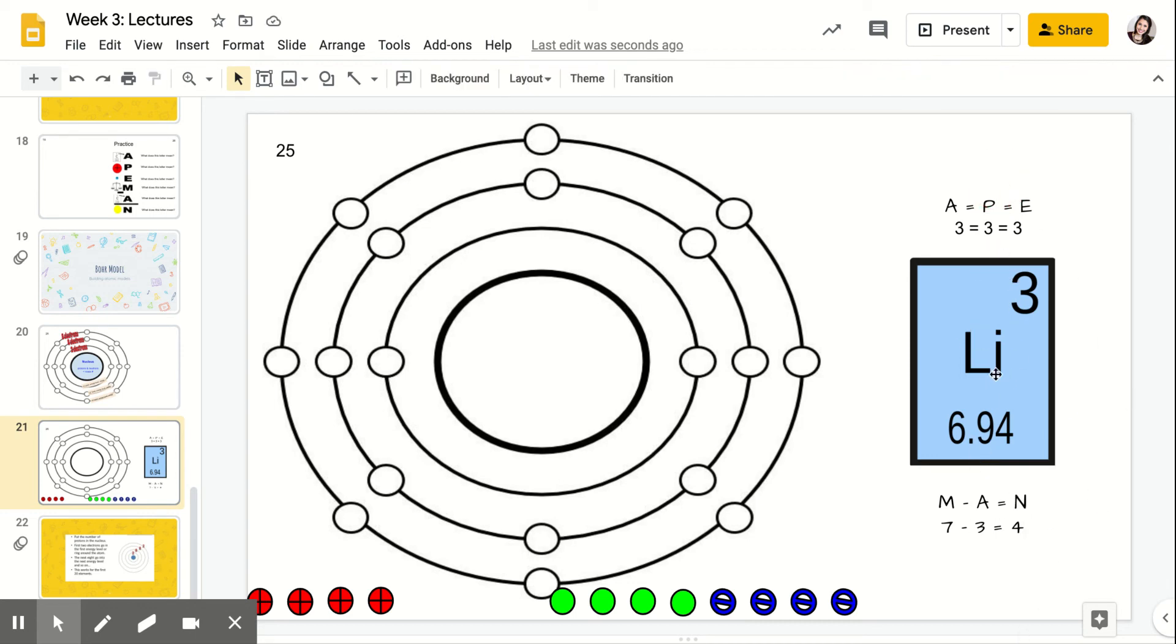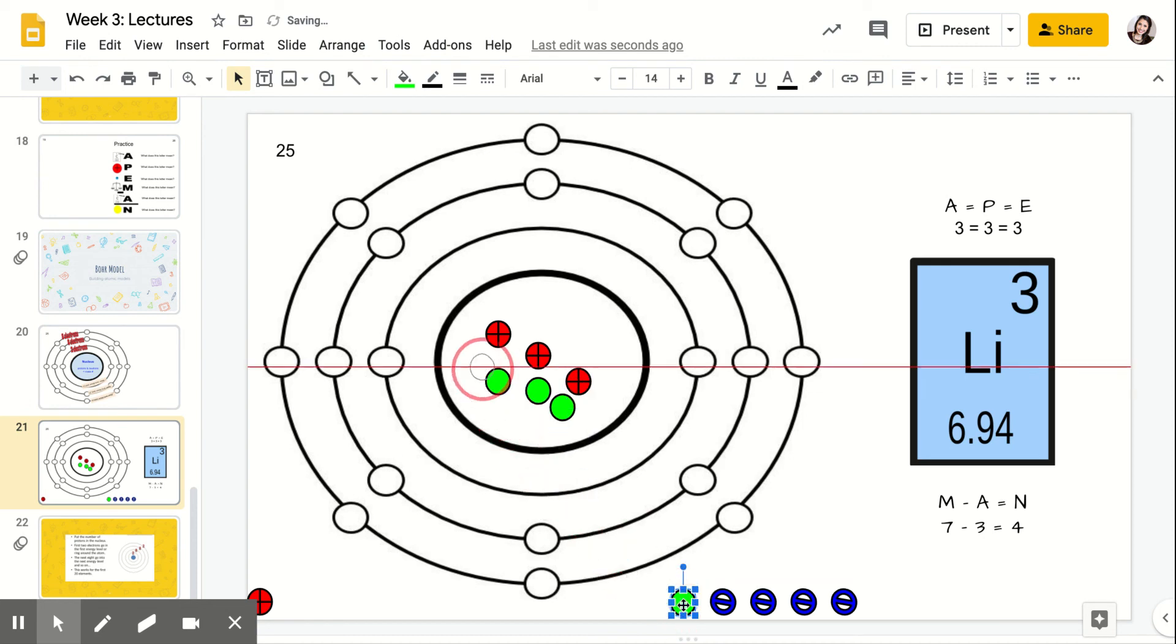So remember start from the inside. Protons, I have three, so one, two, three. Neutrons, I have four: one, two, three, four.